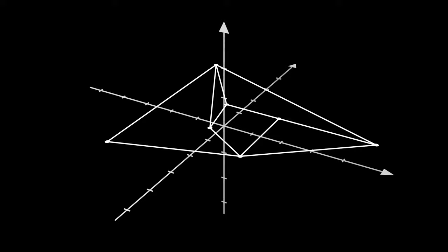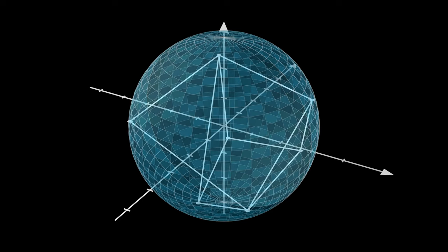Next, we show the other direction, where we can take a planar graph and map it to a graph on the surface of a sphere through the inverse of stereographic projection.